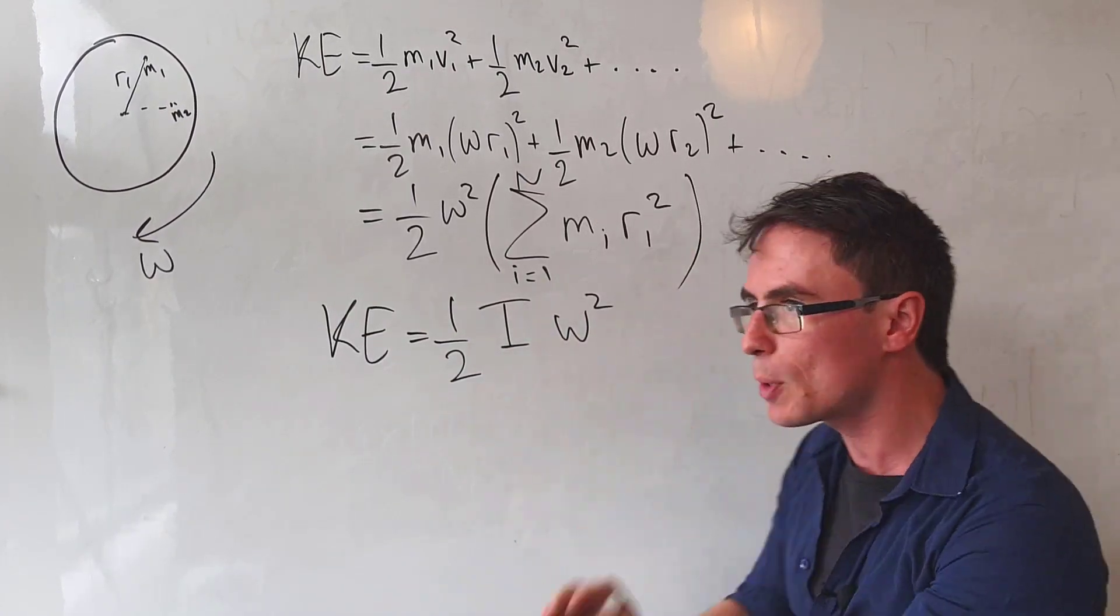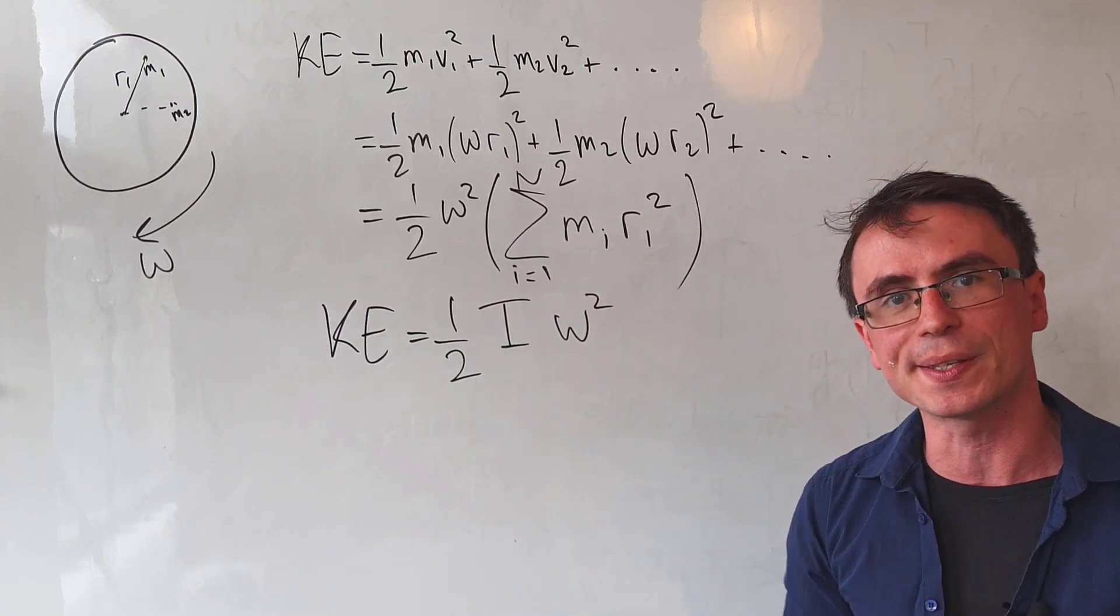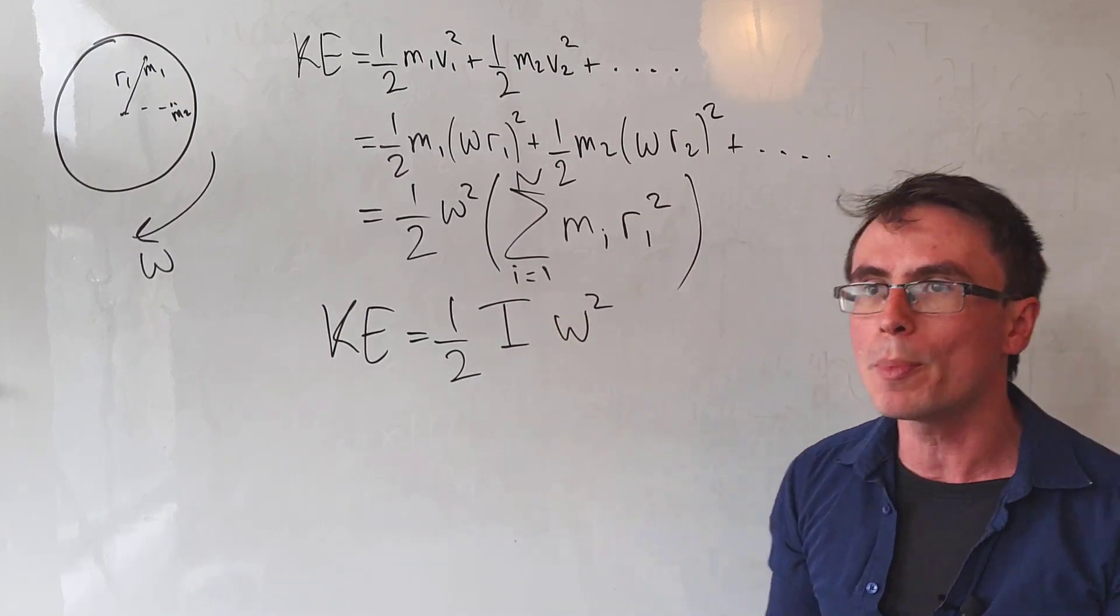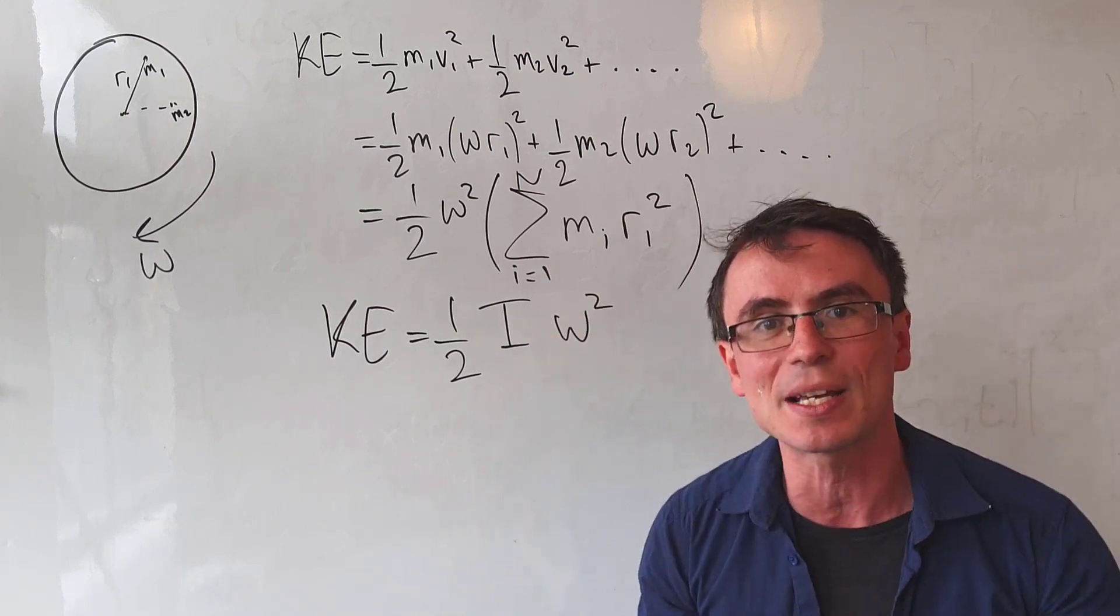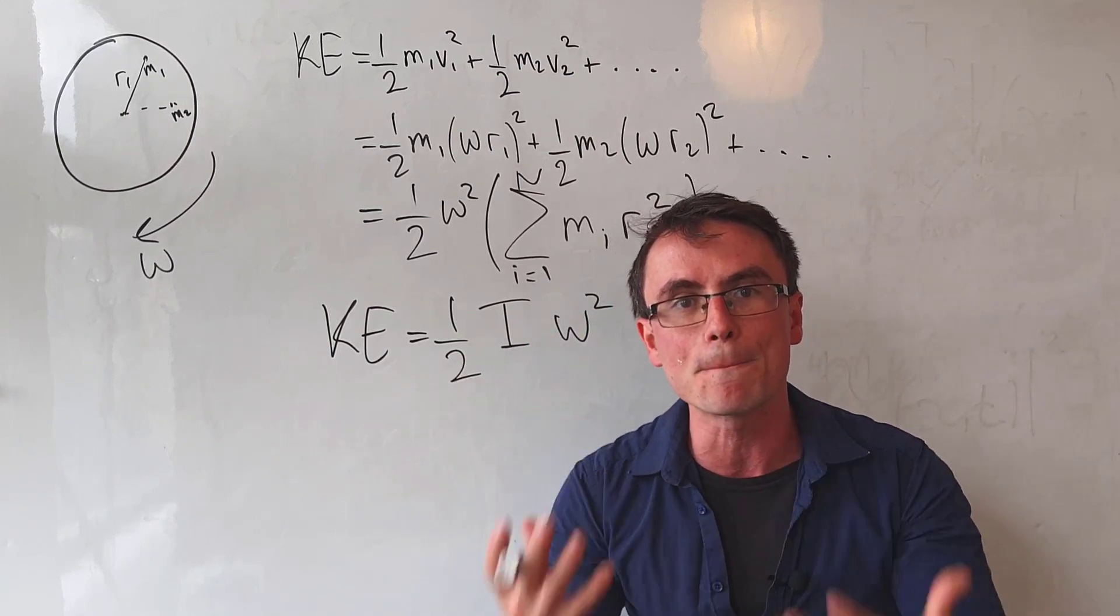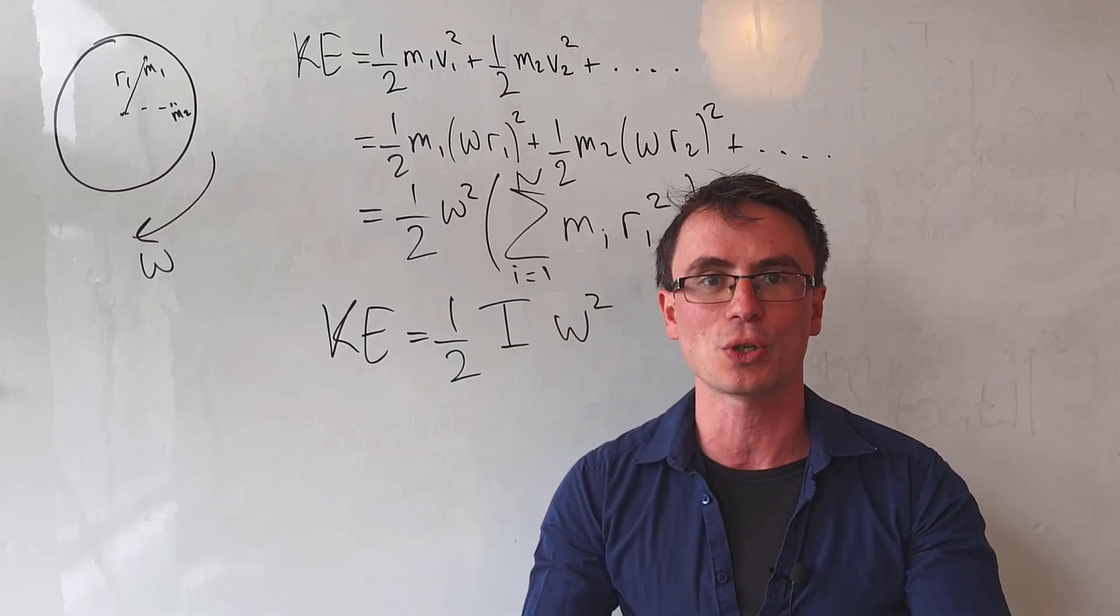Notice how similar this is to a half mv squared. In a way, the moment of inertia plays a similar role compared to the mass in translational physics.